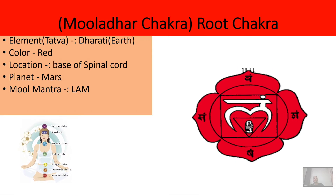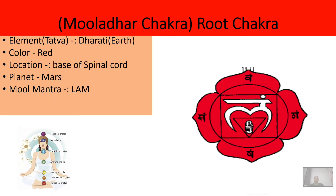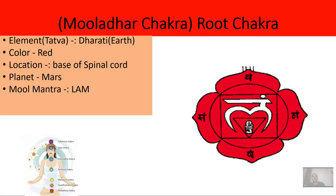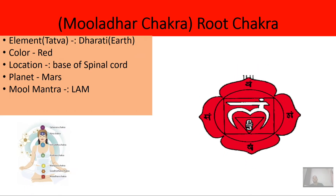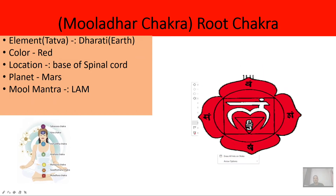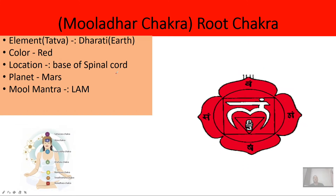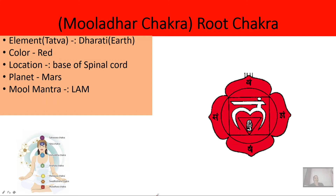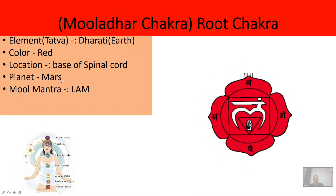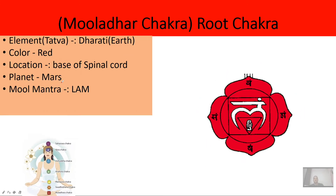In Sanskrit, the root chakra is called the Muladhara chakra. The mula mantra of this chakra is 'Lam.' The element associated with this chakra is the earth, the color is red, and the location is the base of the spinal cord. The planet associated with this chakra is Mars. That covers the first chakra — the root chakra. Let's move to the second chakra.